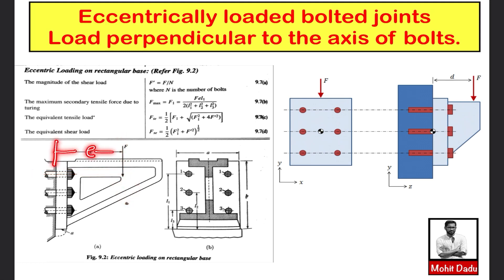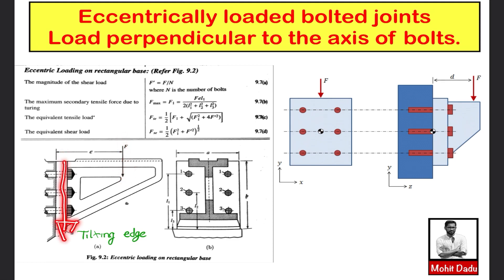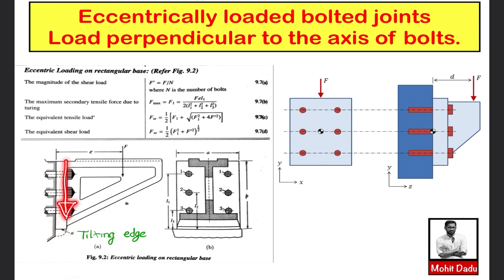The distance between the load and the reference point is known as eccentricity. This load will try to tilt the bracket about its edge, which is known as the tilting edge, labeled point A. You can transfer this force from the eccentric point to the bolt location — you will then have a force acting downward and an opposing force creating a couple.